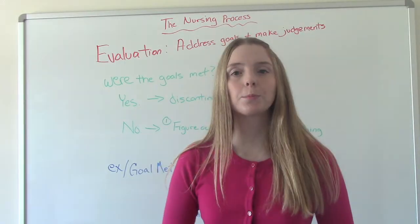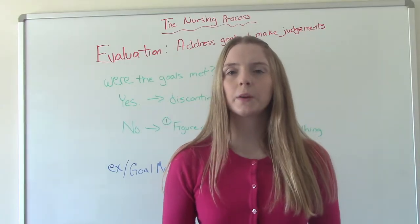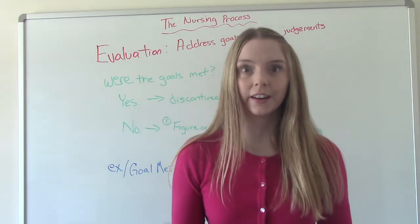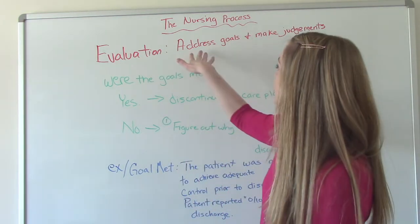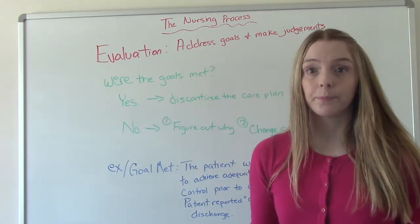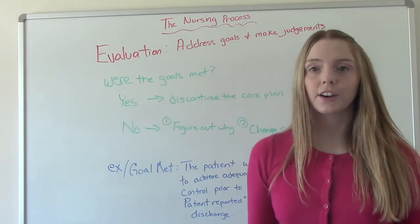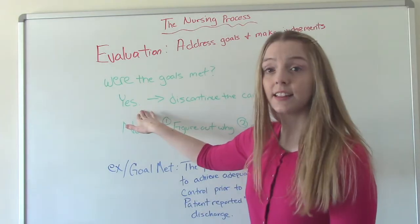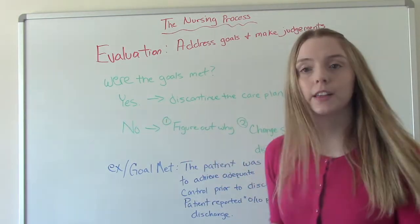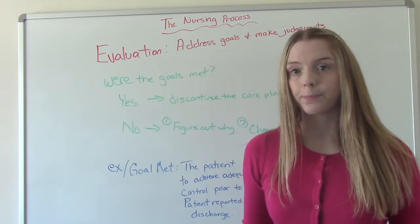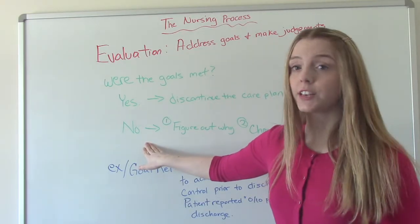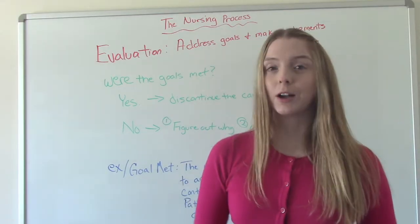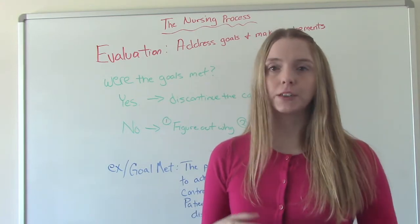The final step in the nursing process is evaluation. What are we evaluating? We're evaluating our own plan — did it work? In evaluation, we're addressing the goals and making judgments on them. Were they met? That's the big question. If yes, that's great — we can discontinue the care plan because our goals are met. If no, the first thing you want to figure out is why. Were they not SMART outcomes? Were they not realistic, not specific, not measurable, not timely?